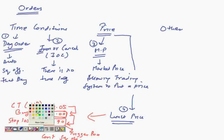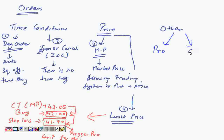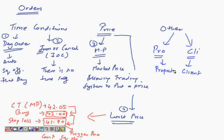There are other conditions as well, called PRO and CLI. If a trader orders for himself, it is a PRO order — a proprietary order. If the trader is ordering on behalf of a client, it is called a CLI — a client order. So PRO means for himself, CLI means for the client.